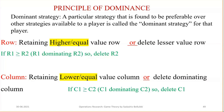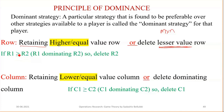If the matrix is given as m by n, we can solve it using the dominance principle to reduce it. For row reduction, retain the higher or equal value row and delete the lesser value row. If R1 is dominating R2, then delete R2. To identify domination, check if all elements of R1 are either greater than or equal to R2.